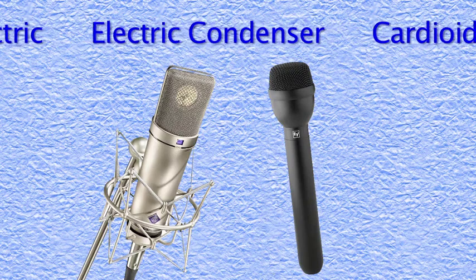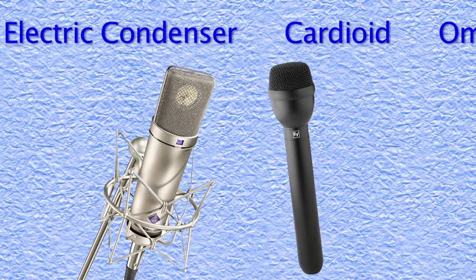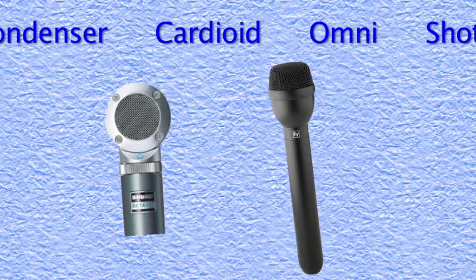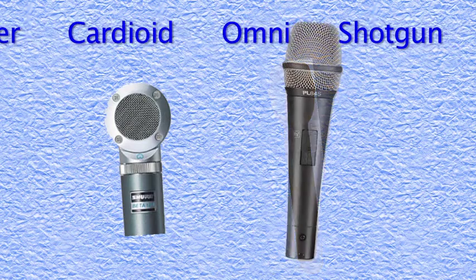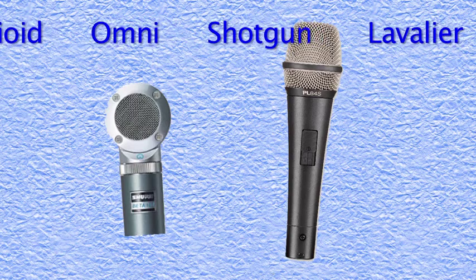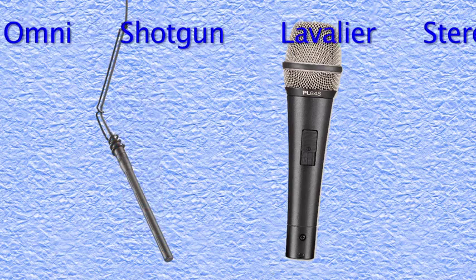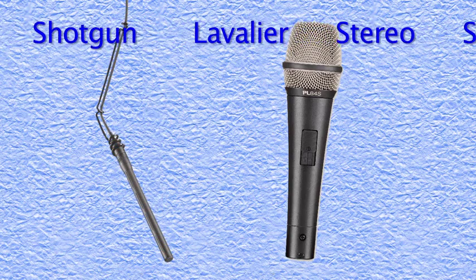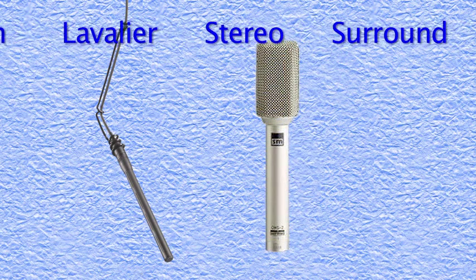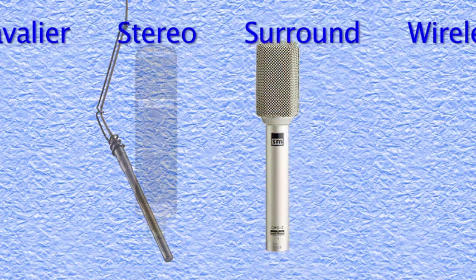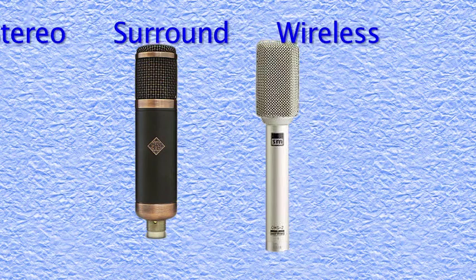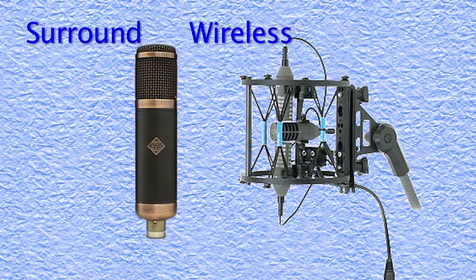An ideal mic would be rugged so it could stand up to harsh environments and treatment. It would also respond to every nuance of the desired sound. But to do this, the pickup — the part of the mic that actually converts the sound into an electric signal — would have to have very little mass, making it easy for the faintest sound to be picked up.